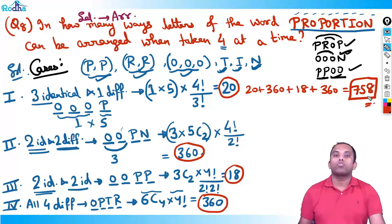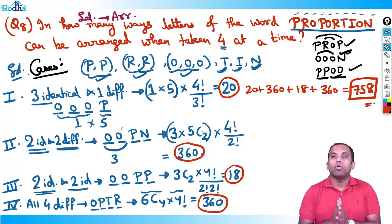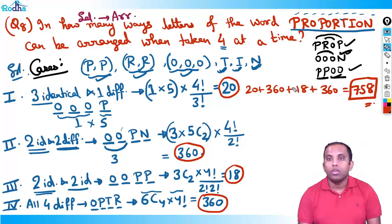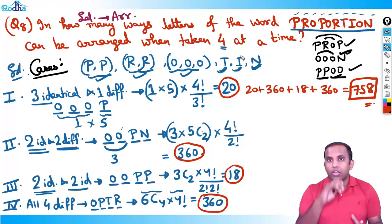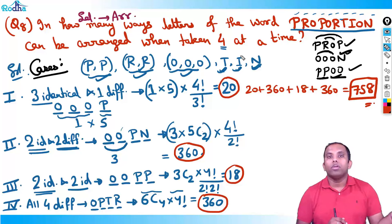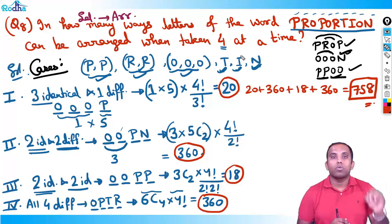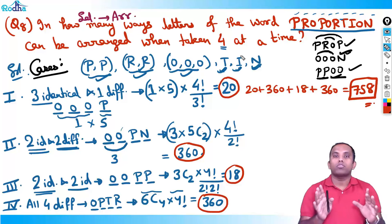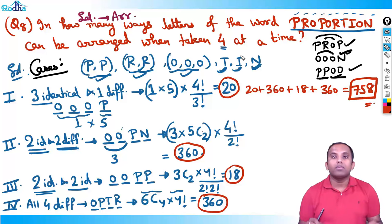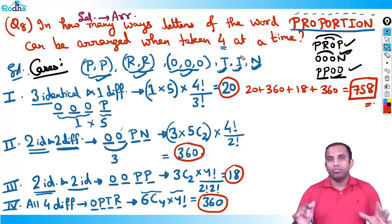A super question — absolutely super and very important for your exams. This concept is critical. We'll discuss the next question in the next video. In this video we covered two very important questions: how many six-digit numbers can be formed using digits five, six, seven, eight such that each digit is used at least once (answer: 1560), and the PROPORTION word arrangement problem (answer: 758). Watch it three or four times to get every concept. Thank you.